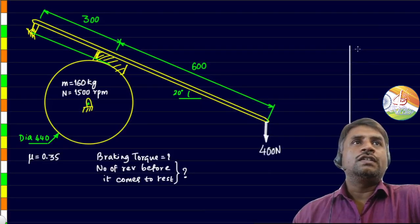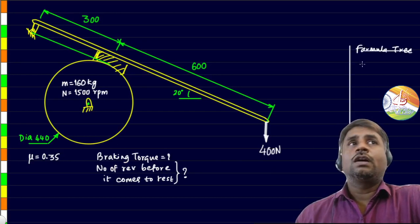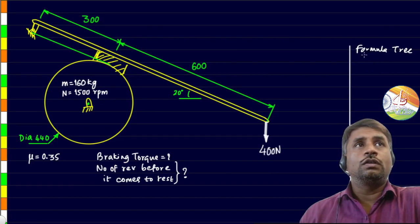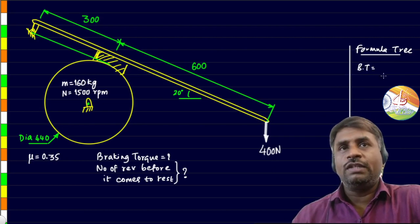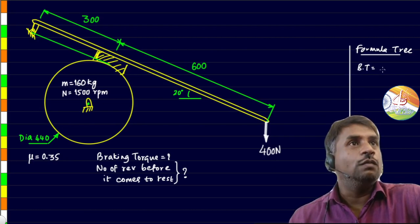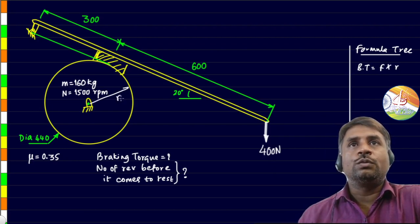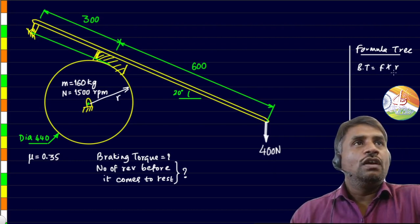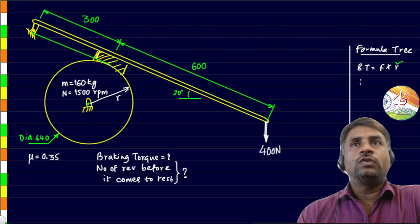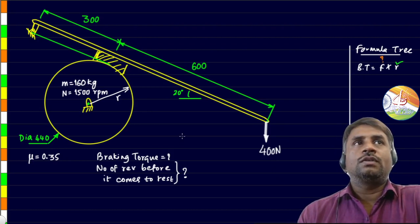Let us put here the formula tree to understand how exactly we are going to solve this. First we need the braking torque and the formula for braking torque is the force multiplied with the perpendicular distance. In this case the perpendicular distance has to be equal to the radius. Diameter has been given so radius can be extracted. Radius here is known but we need the force of friction.